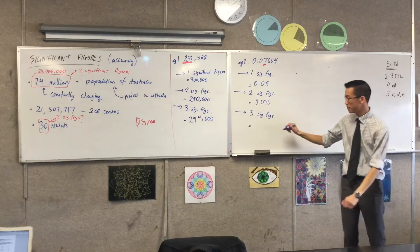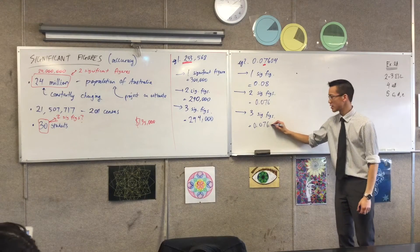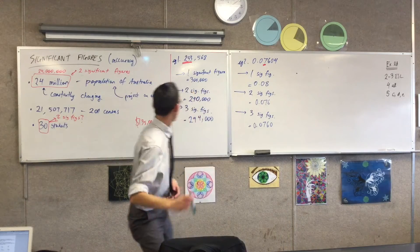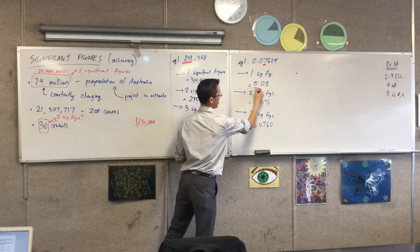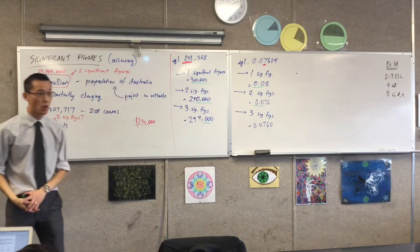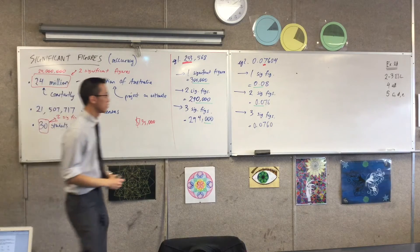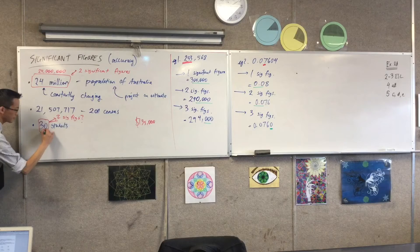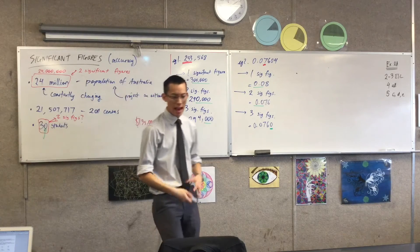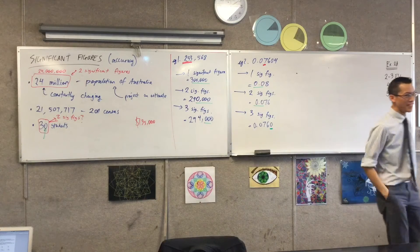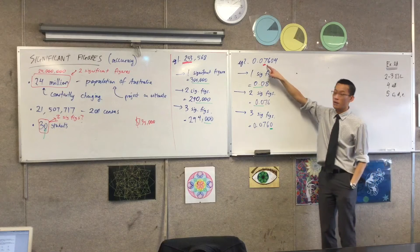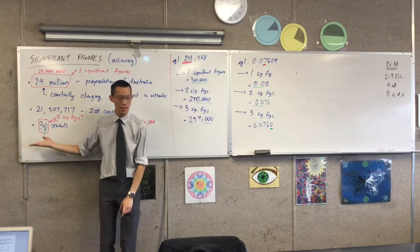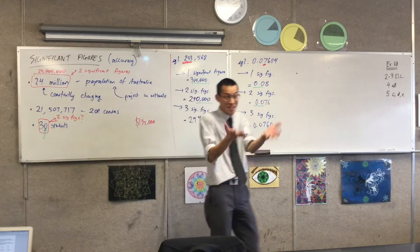Now for three significant figures — what did you get? 0.0760. This is interesting and makes me pause. When we look at all these other questions, the zeros I underlined were insignificant — they didn't matter, they weren't part of the accuracy. But this zero here is exactly the same as this other zero — it matters. I want the three most important numbers, and they happen to be a seven, a six, and a zero. Don't be discriminating against zero — it can be an important number too.